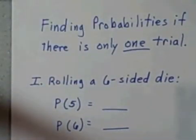This is the discussion of finding probabilities if there is only one trial. Please recall that given a well-defined random procedure, a trial is the action of the procedure, the random action that's taking place. We're going to discuss how to find probabilities if there was only one trial taking place.